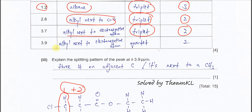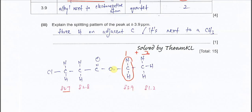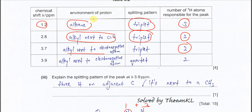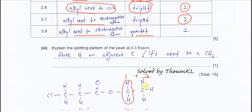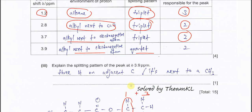For chemical shift 3.9 ppm, this belongs to the CH2 next to the oxygen. This CH2 has an adjacent carbon with three protons — from the CH3 group — so it's 1+3, giving a quartet. It appears at 3.9 ppm because this CH2 is next to an electronegative atom. The environment of the proton is alkyl next to electronegative atom, the splitting pattern is a quartet, and there are two hydrogens responsible for this peak.